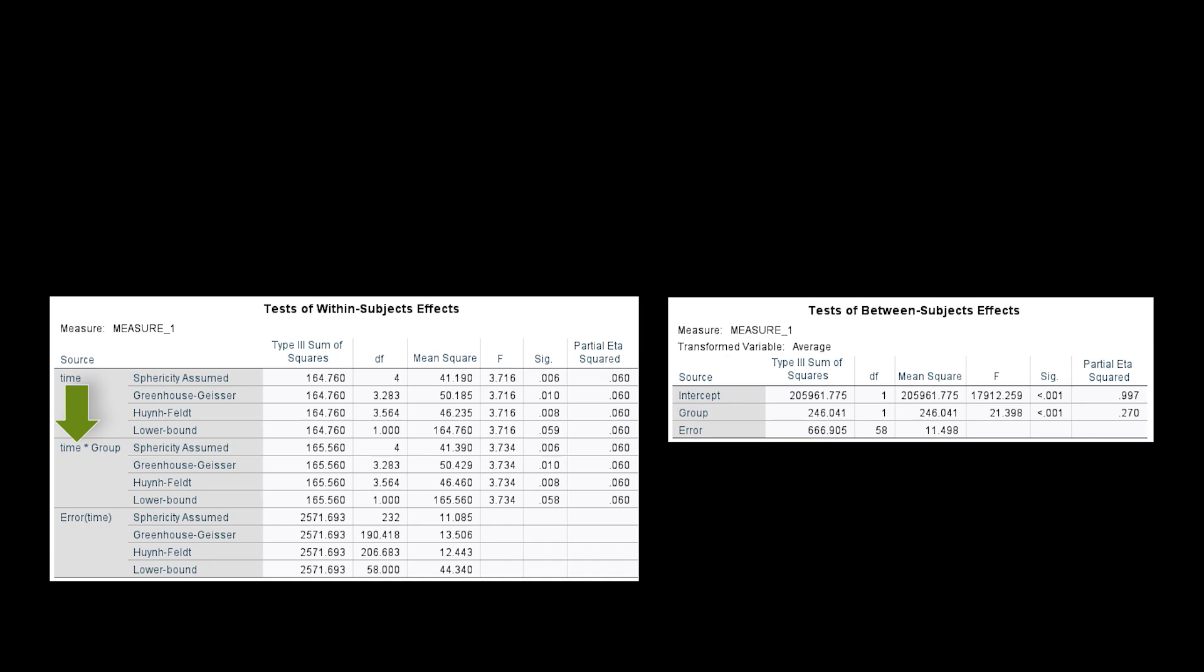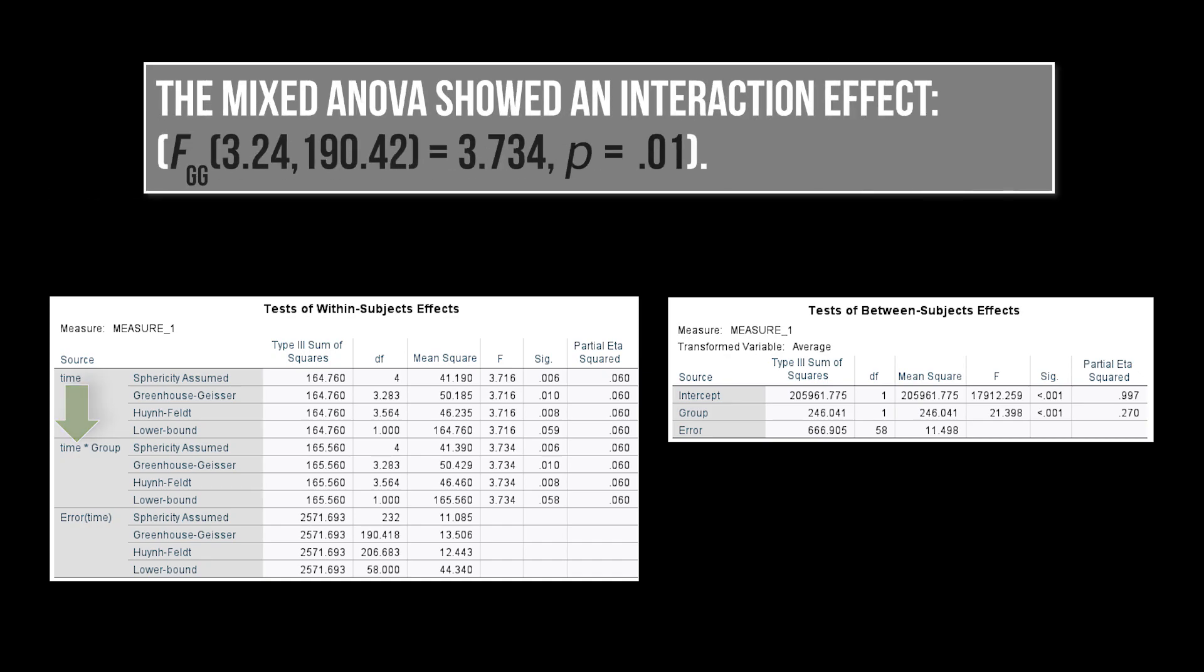Scenario 2: If an interaction effect between within subjects and between subjects effect could be observed, only this is reported. But beware, some reviewers may still insist on reporting main effects, although considering them in isolation is meaningless if an interaction was already observed.